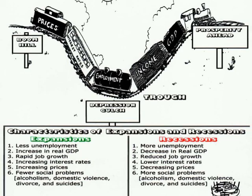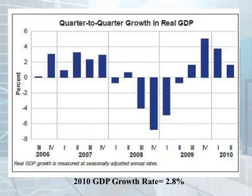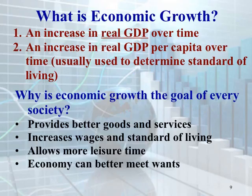Here's a chart that might help you understand the characteristics of expansions and recessions. Be sure to understand all the characteristics of an expansion and a recession for class — you may be quizzed on them. Here's also a quarter-to-quarter growth in real GDP from 2010, with a GDP growth rate of 2.8%.